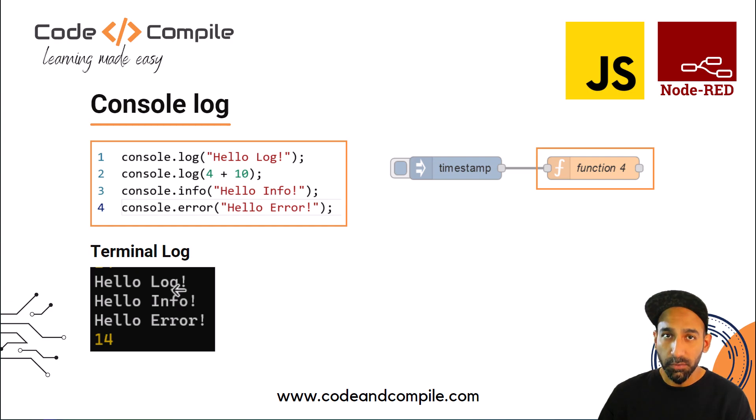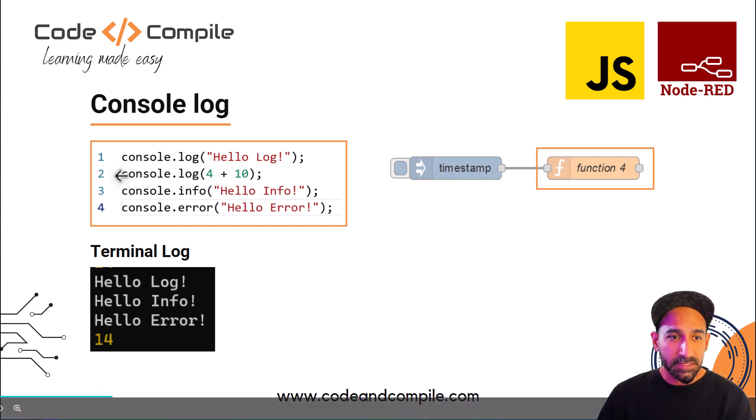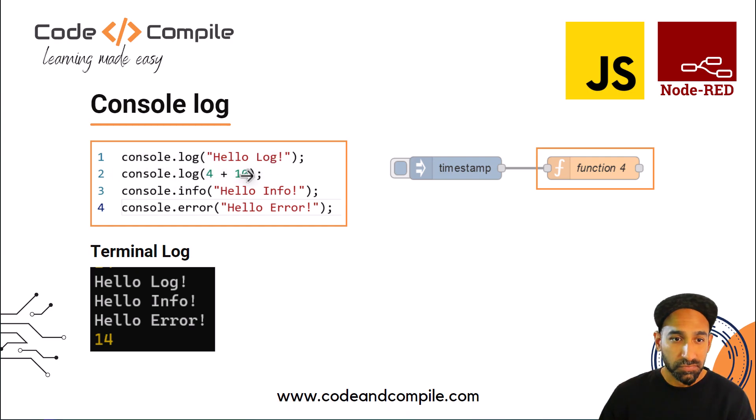Console log is the terminal window where you can log values. Here you can see some examples: I have console.log hello log, console.log four plus ten, some mathematic instruction, console.info and console.error.